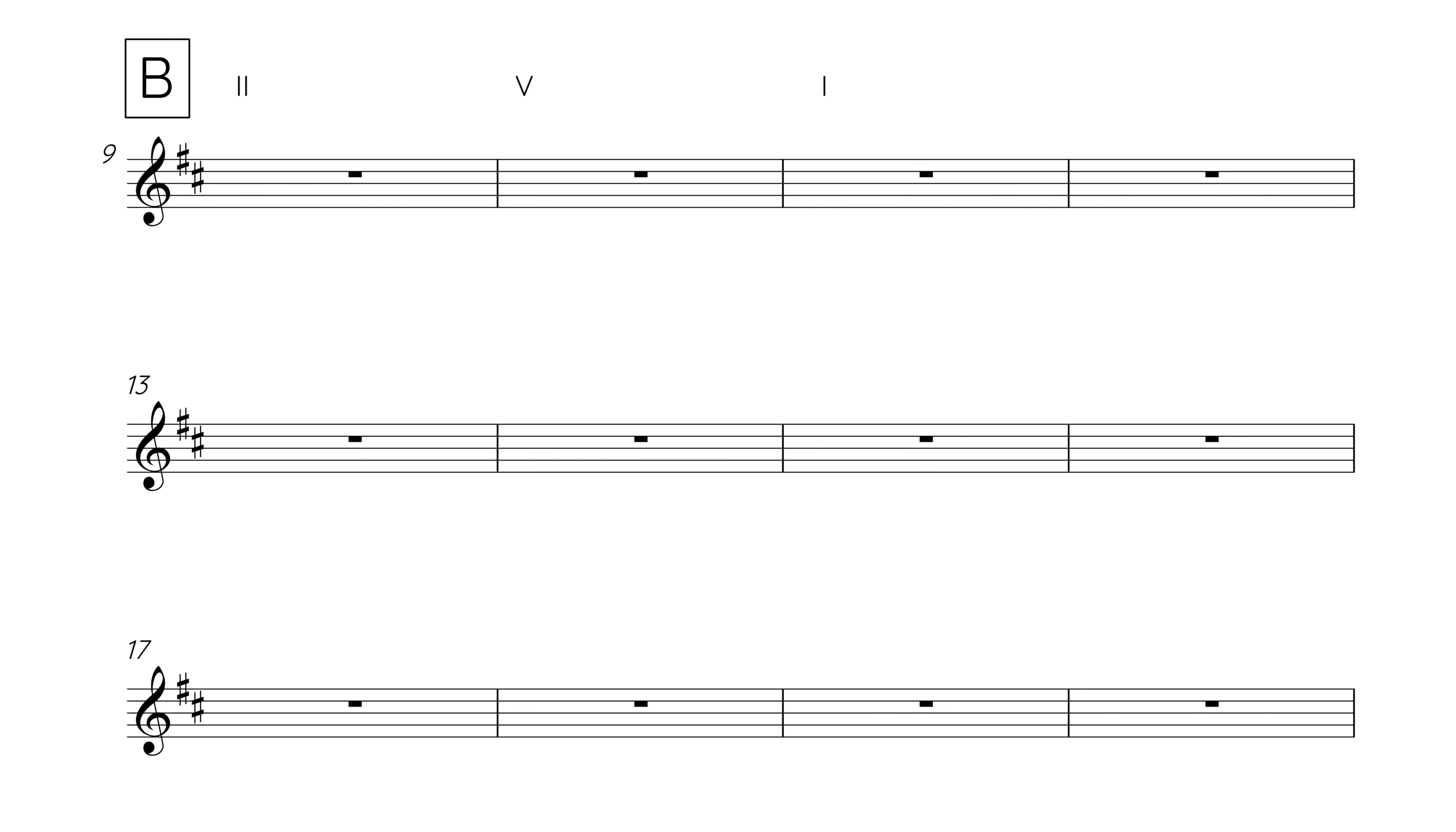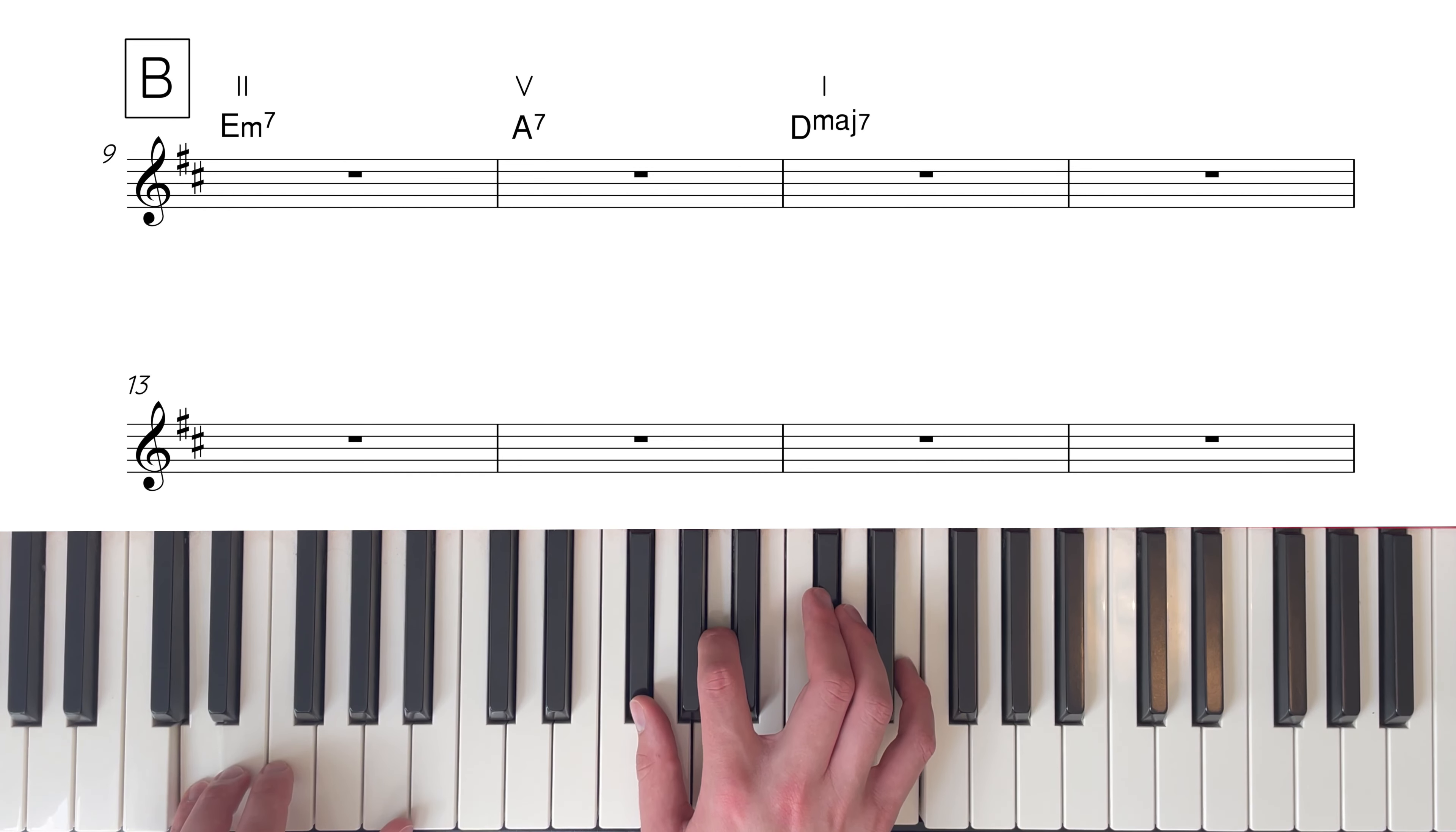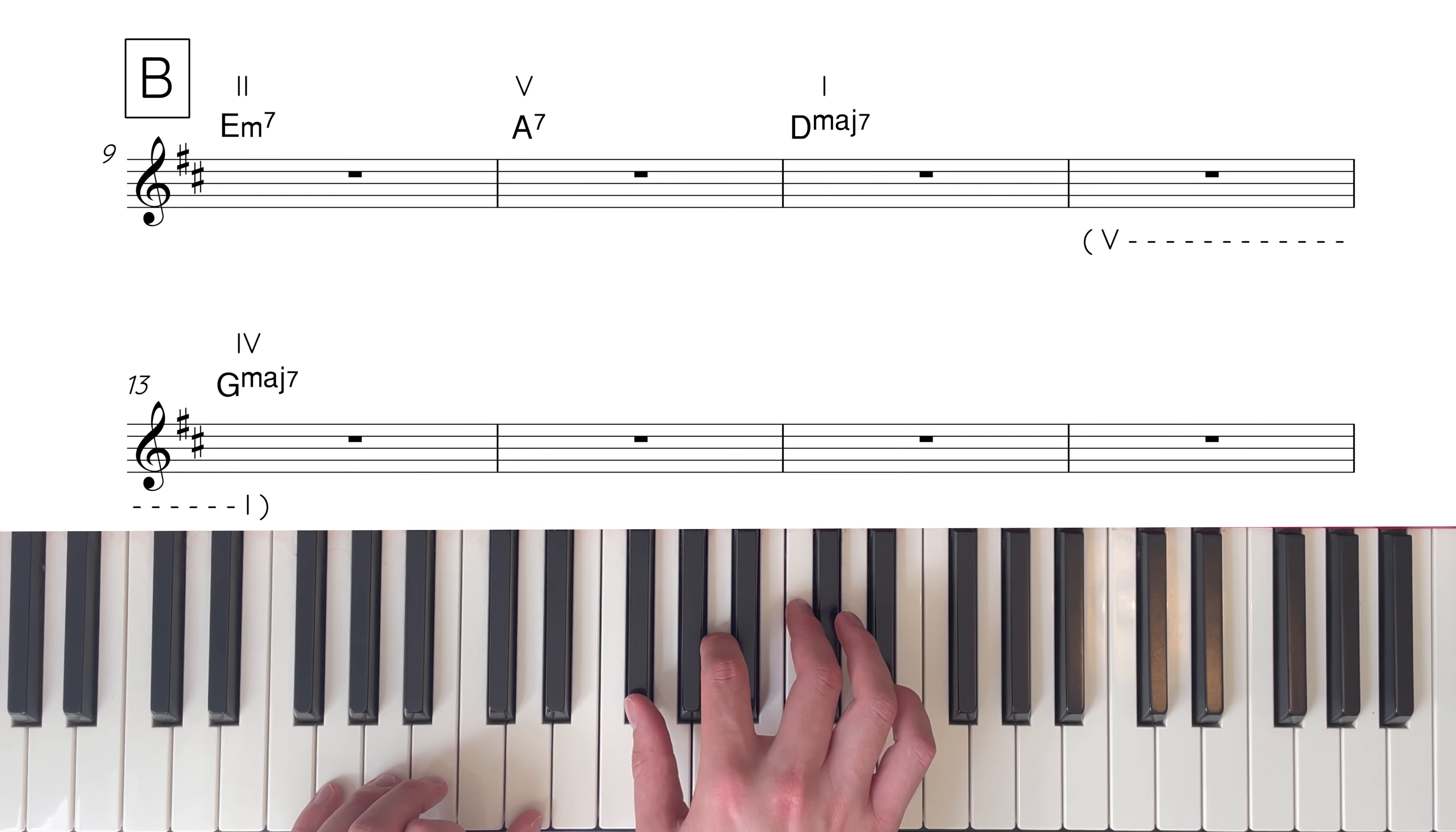Currently, this figure is a 1 bar phrase, and it's turned into a 2 bar phrase through a push into the 2nd bar, on the root, G. This not only gives the bass line momentum, but the improviser and rhythm section some rhythmic information to play off.